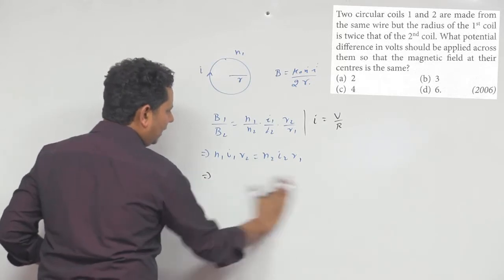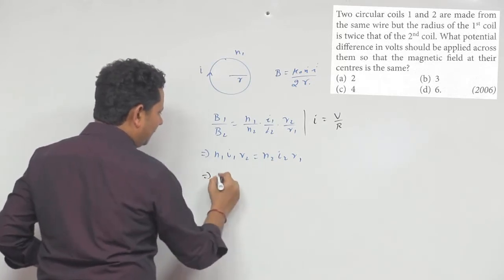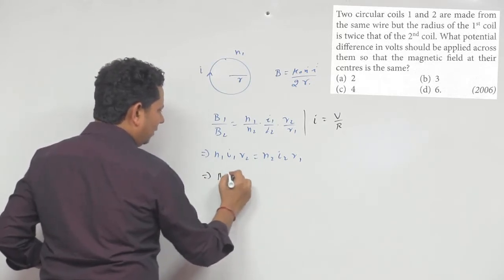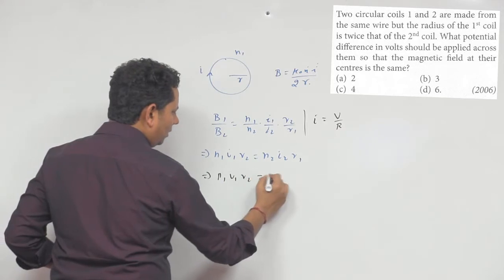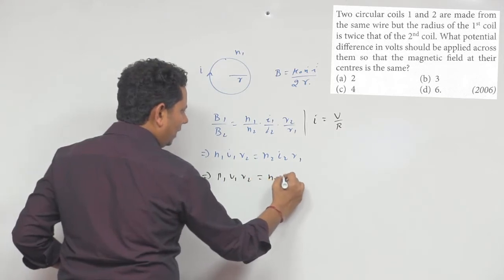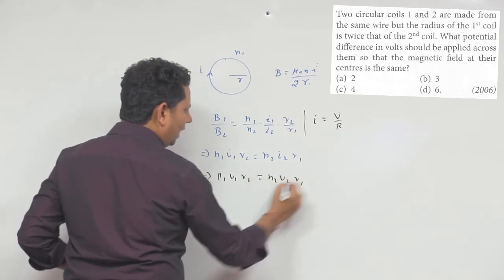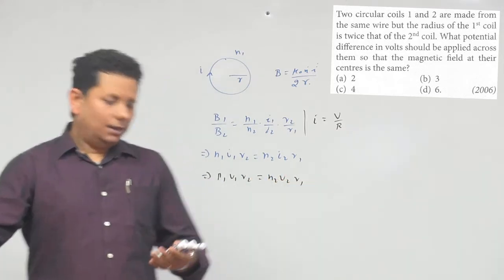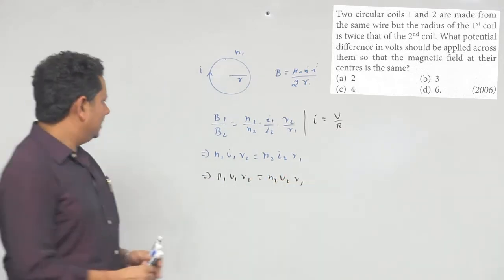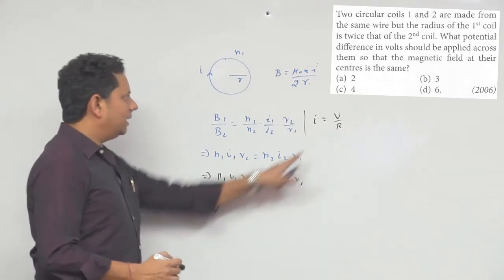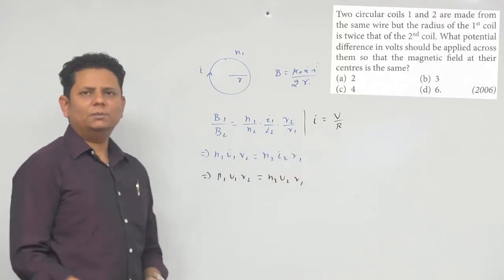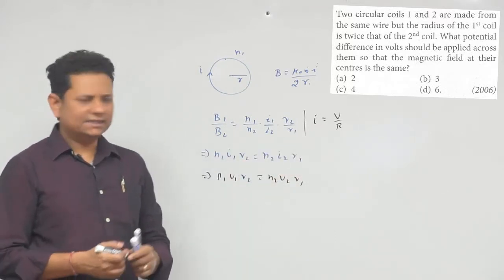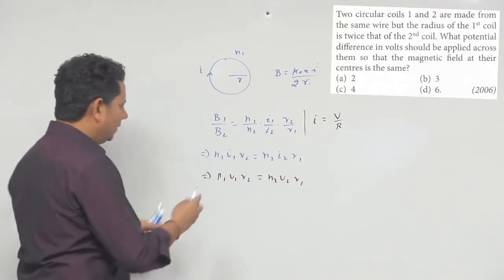क्योंकि दोनों same wire हैं, दोनों का resistance same होएगा, इसलिए capital R eliminate हो जाएगा। इससे हम लिख सकते हैं: N1·V1·R2 = N2·V2·R1।